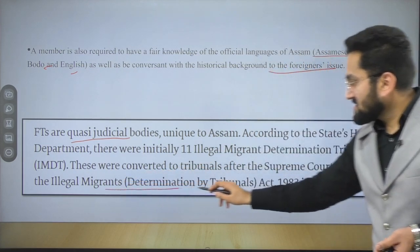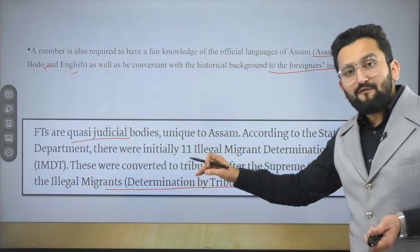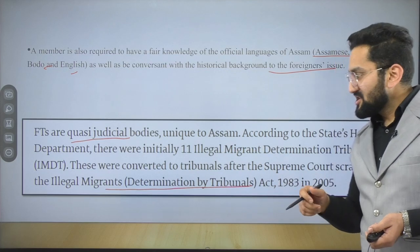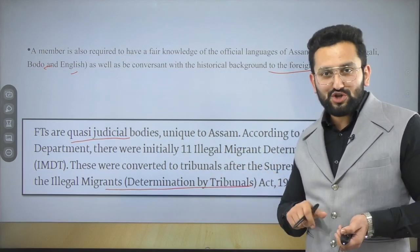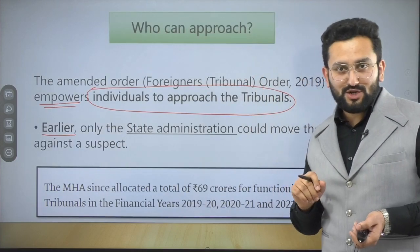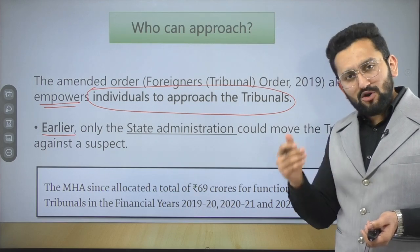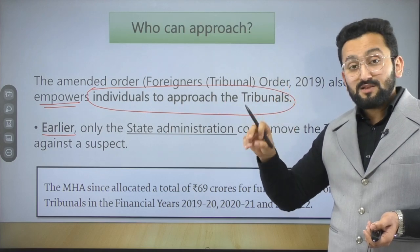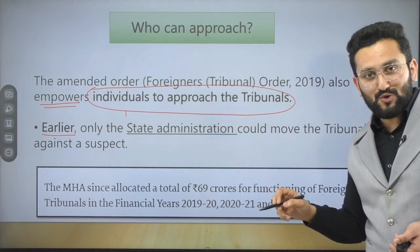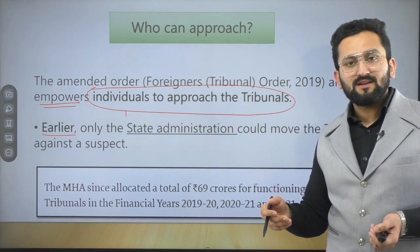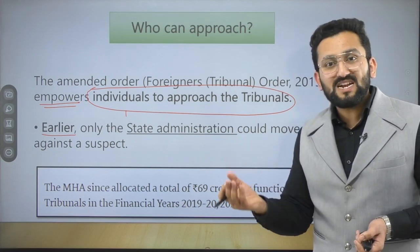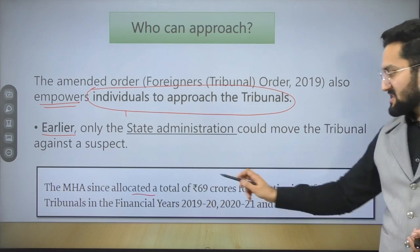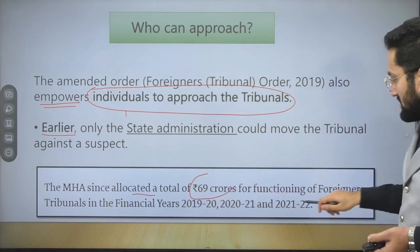Earlier there was the Illegal Migrants Determination by Tribunal Act 1983, but the foreigners tribunal has now replaced it — be clear on this as examiners may try to confuse you with the older body. Who can approach the tribunal? Earlier, only the state administration had the power to launch a complaint. But now this power is with individuals also — if the NRC is being prepared and you think your name should be added, you can go there on your own. A basic fact: 69 crores were actually allocated by MHA for the creation of foreigners tribunals.